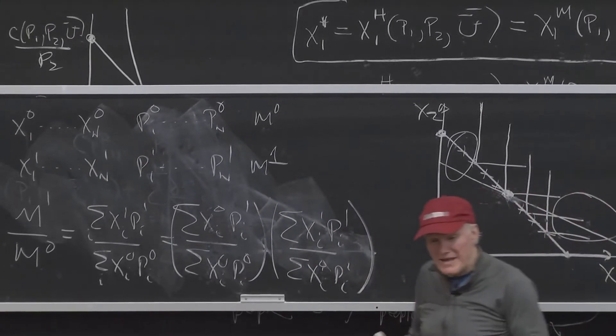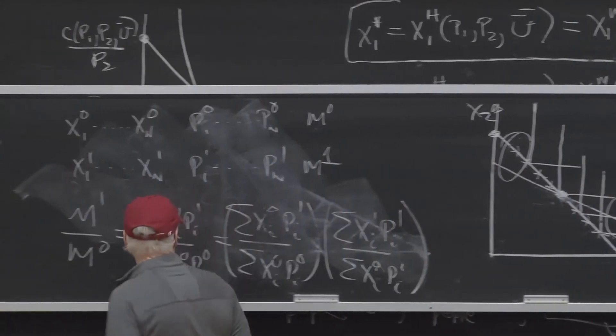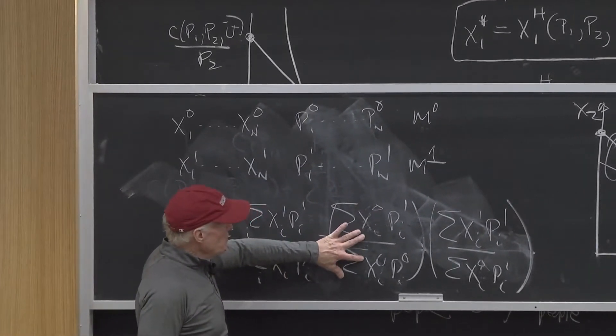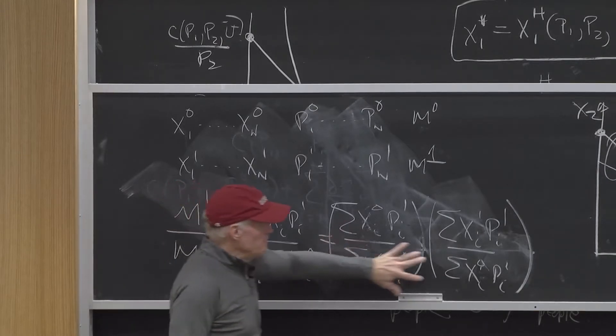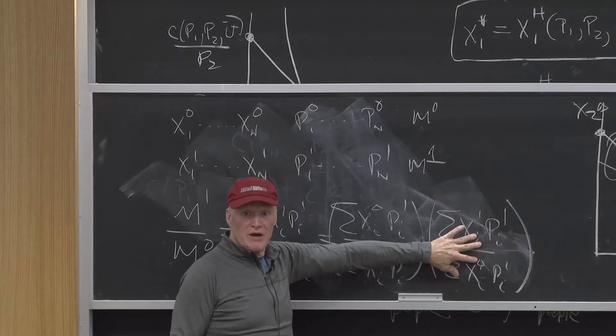Sometimes people talk about base year. For this comparison, period zero is the base year for my price index and period one is the base year for my quantity index.